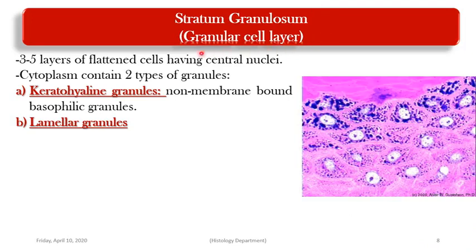Layer three is the stratum granulosum or granular cell layer, formed of three to five layers of flattened cells. The cells contain two types of granules: keratohyaline granules, which are non-membrane-bound basophilic granules containing protein that binds keratin filaments together into bundles; and lamellar granules, which were already mentioned in the stratum spinosum layer.